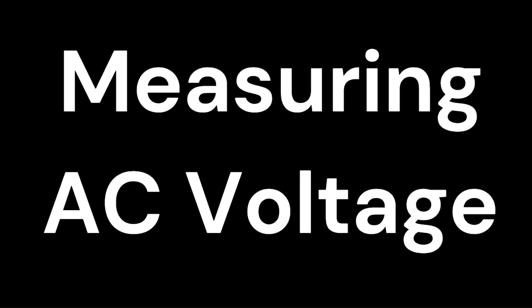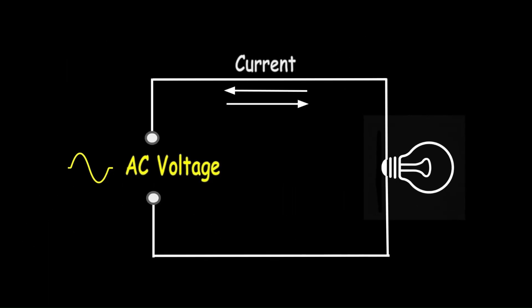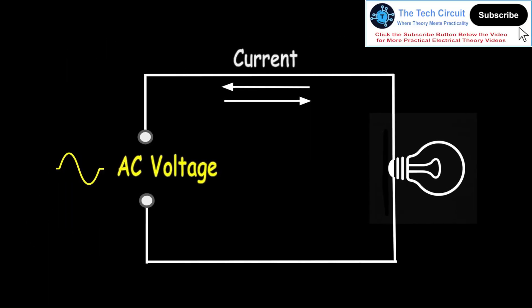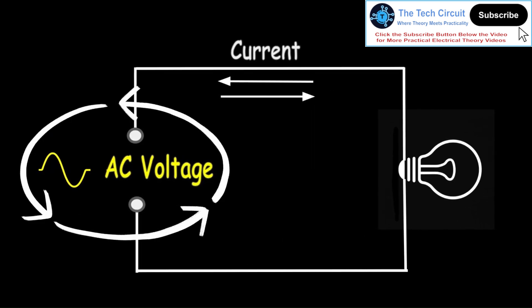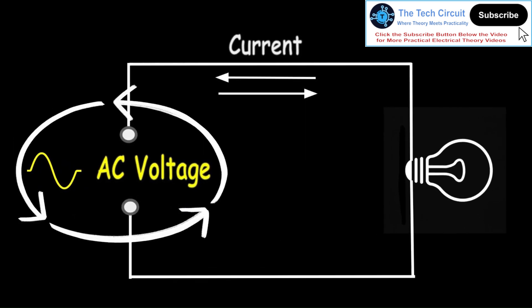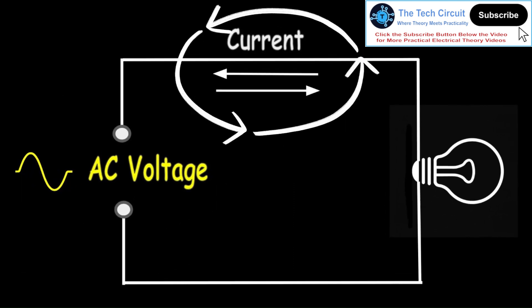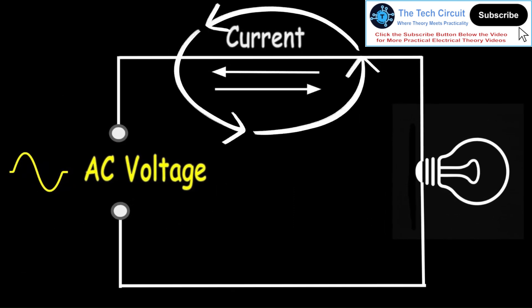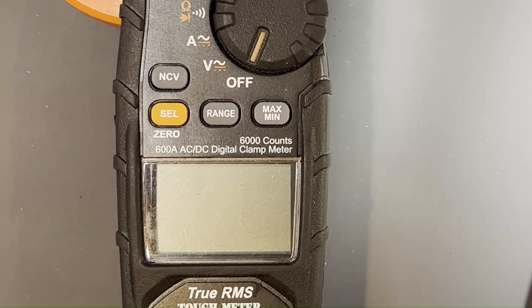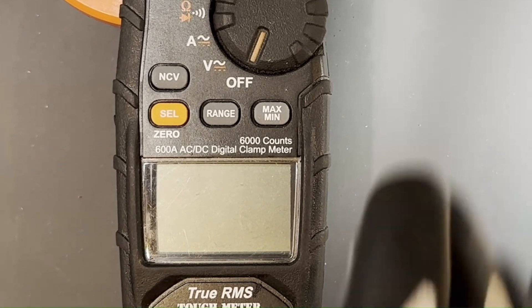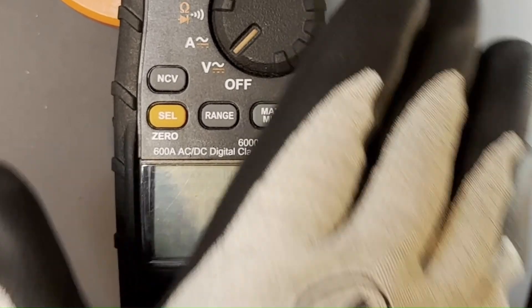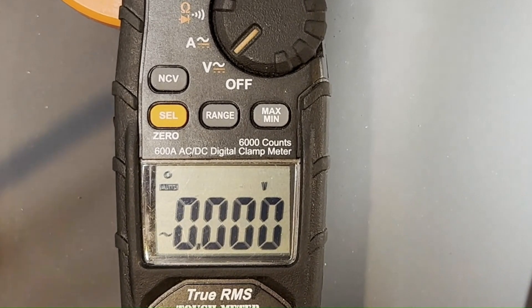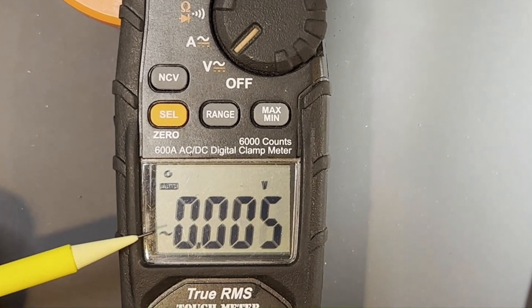Measuring AC voltage. AC, or alternating current voltage, is a type of electrical voltage that oscillates. In other words, the polarity and magnitude continuously change over time. This means that the current alternates direction, flowing back and forth instead of just one way like DC.